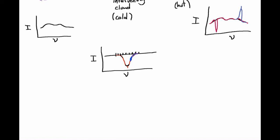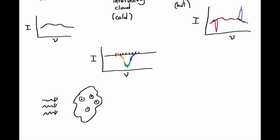We have one cloud with one type of atom that has just one kind of transition — from a ground state into an excited state and back down again. There's an energy difference between the upper and lower energy states of this atom, and that energy difference is equal to h times nu-zero, where nu-zero is the frequency of the photon emitted at the center of the line. But for a variety of reasons, these atoms can actually absorb photons at slightly different frequencies.